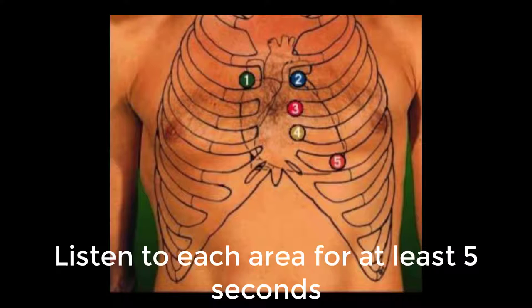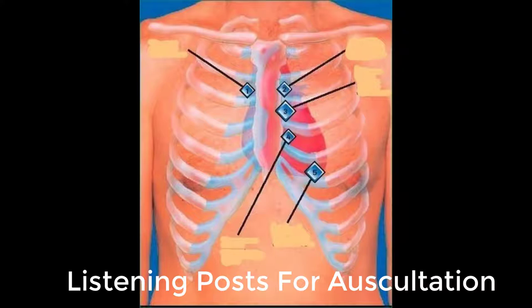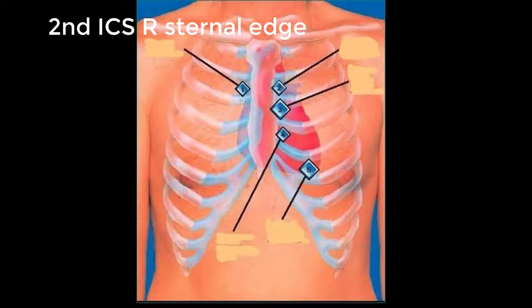Let us review the auscultation surface landmarks or listening posts. First, the aortic area. Place the diaphragm of the stethoscope at the second intercostal space, right sternal edge. This is the anatomical landmark for the aortic valve. Listen for at least five seconds for the second heart sound, which represents the aortic valve closing.